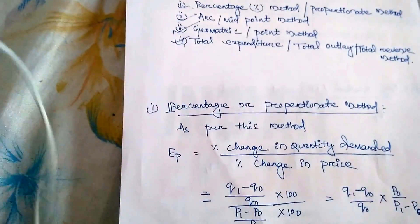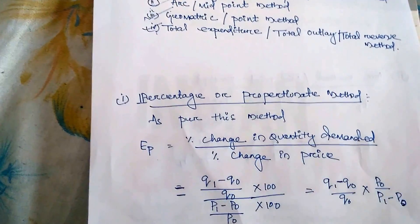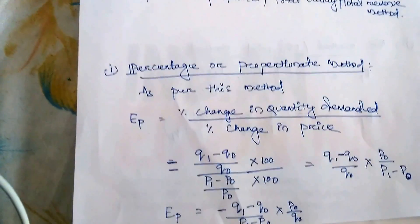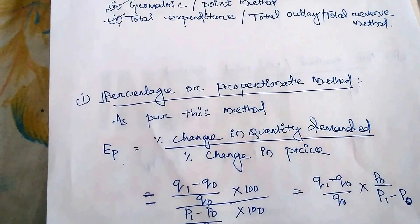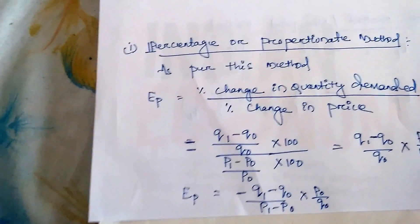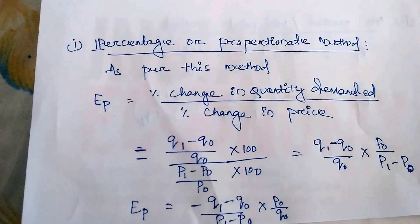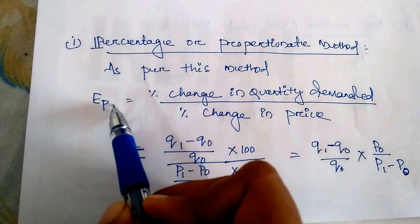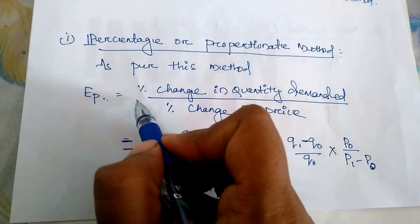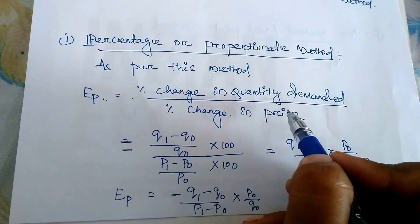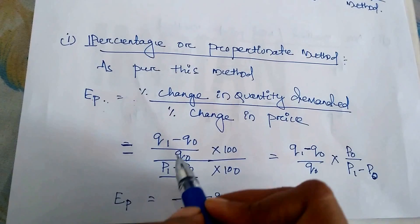First is the percentage or proportionate method — it is a famous and foremost method for price elasticity of demand. As per this method, the formula is: Price Elasticity of Demand = Percentage Change in Quantity Demanded divided by Percentage Change in Price.